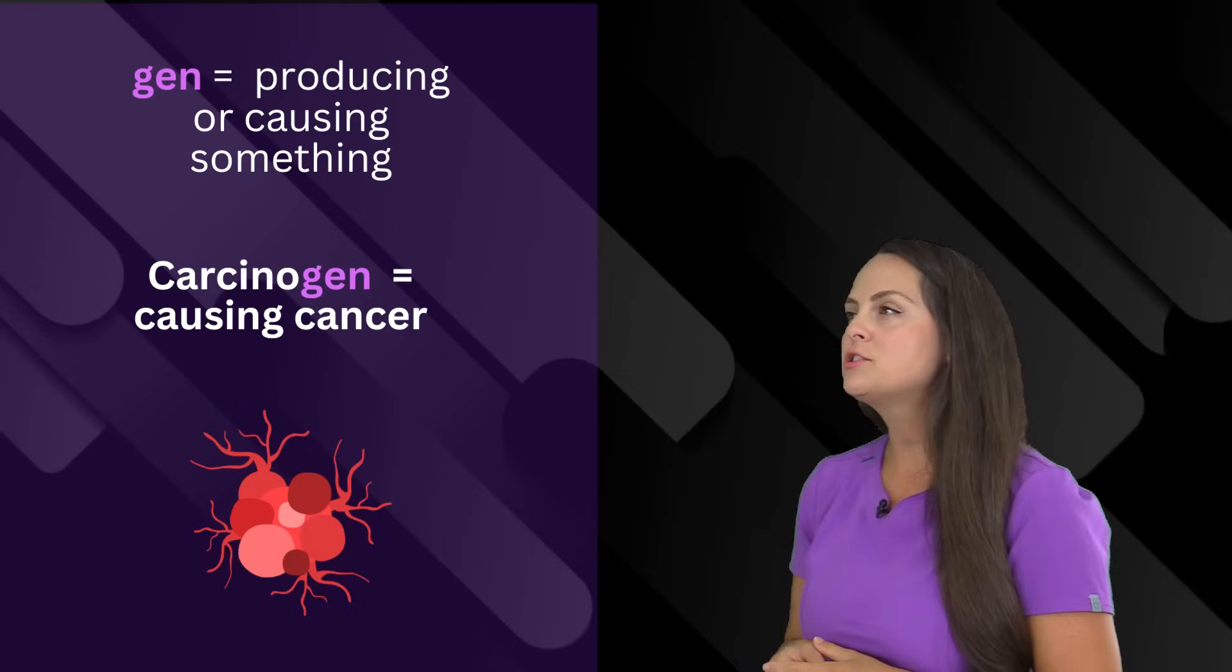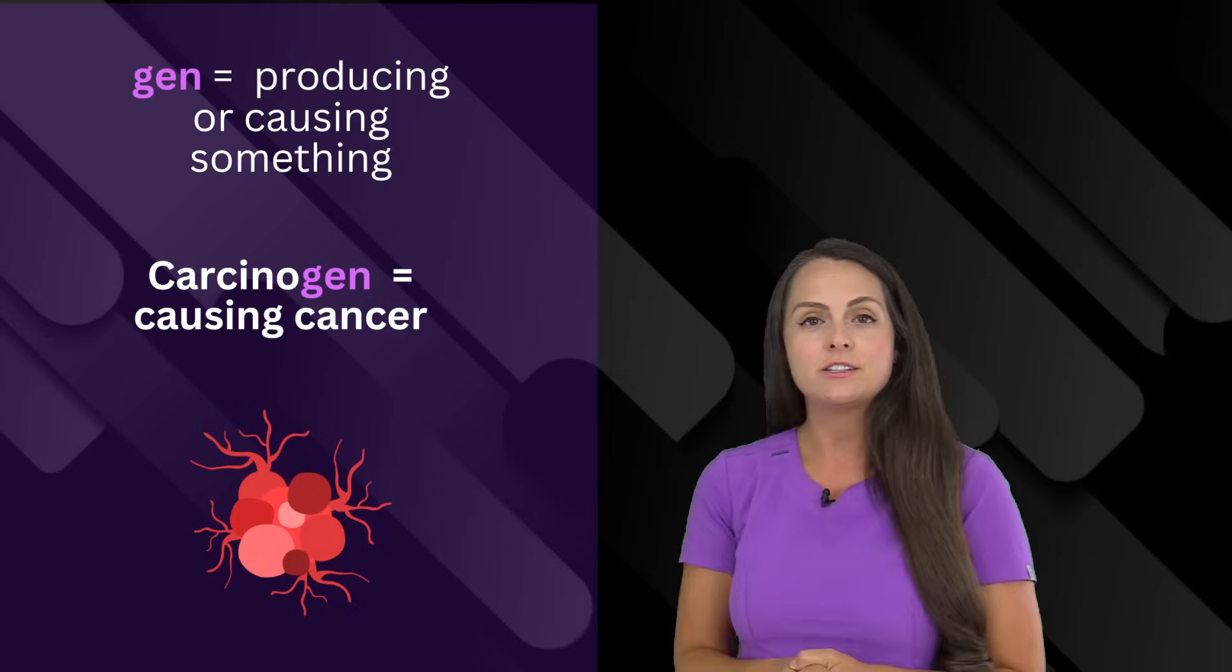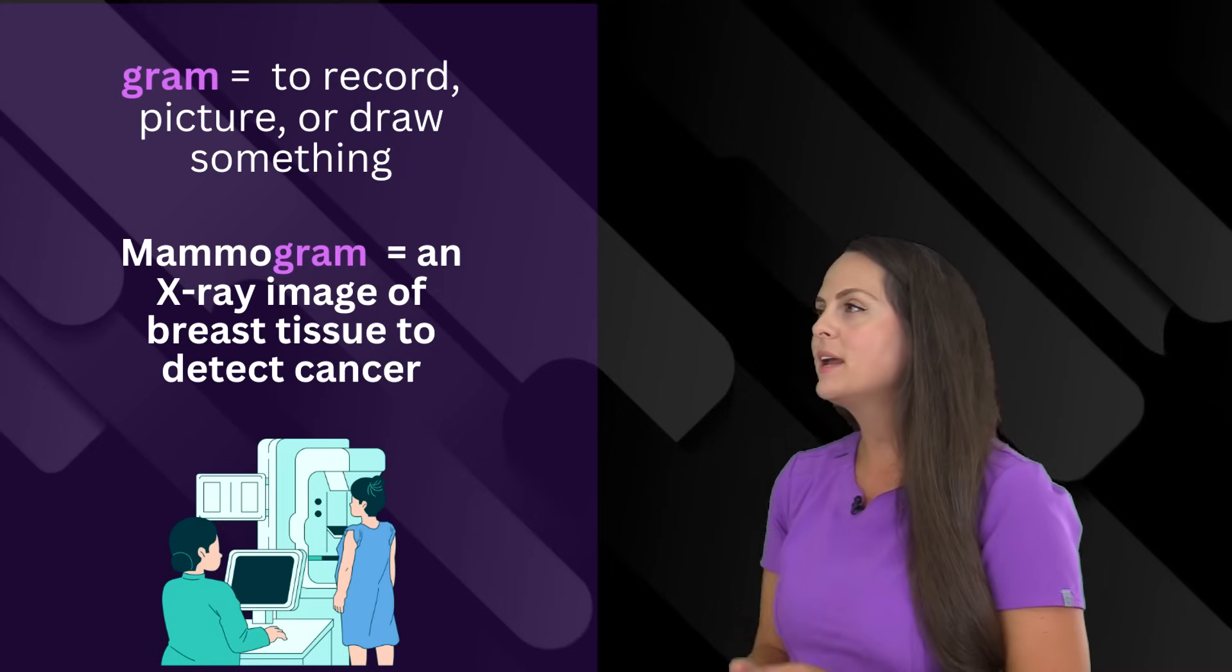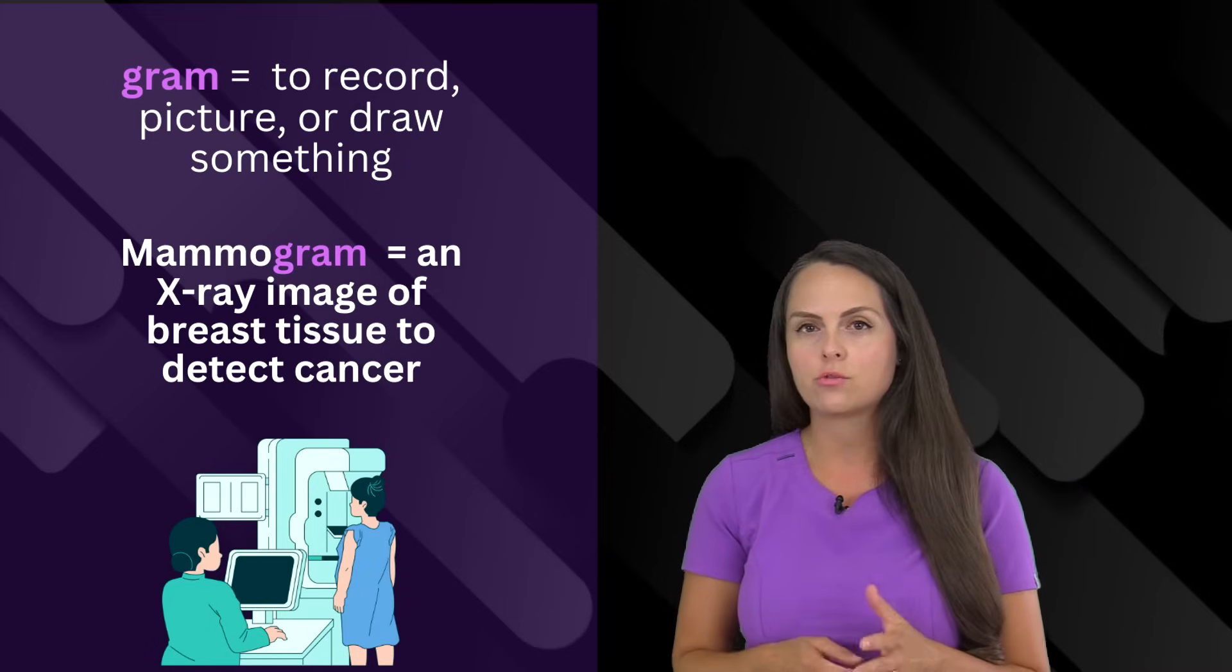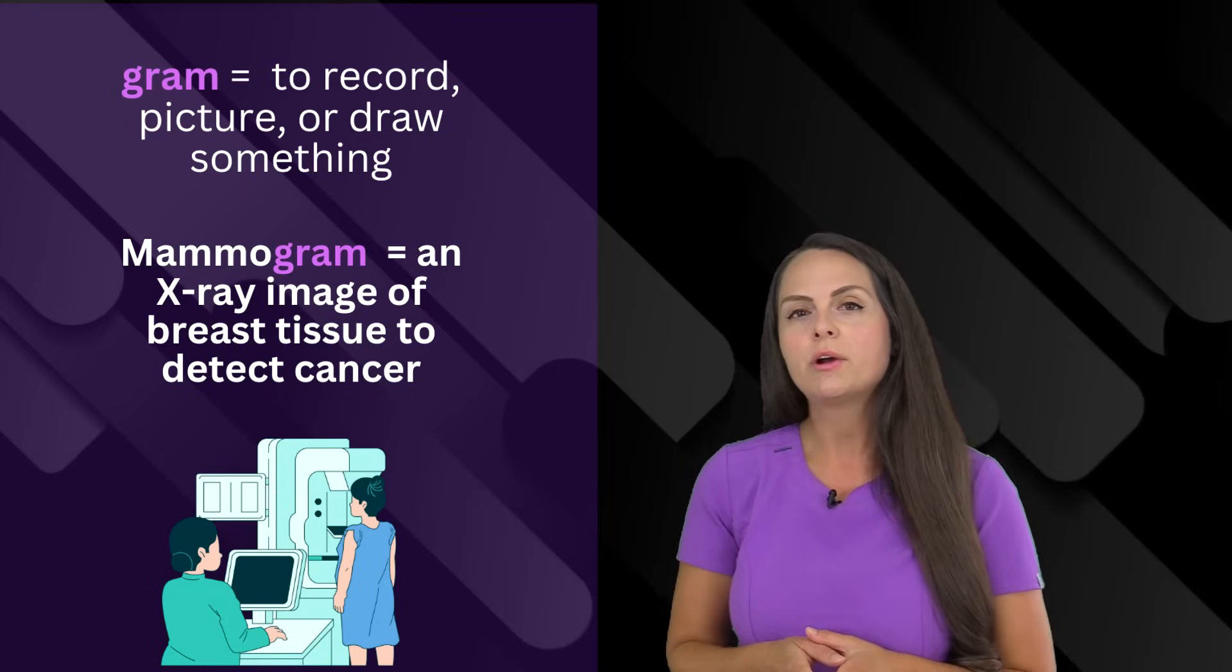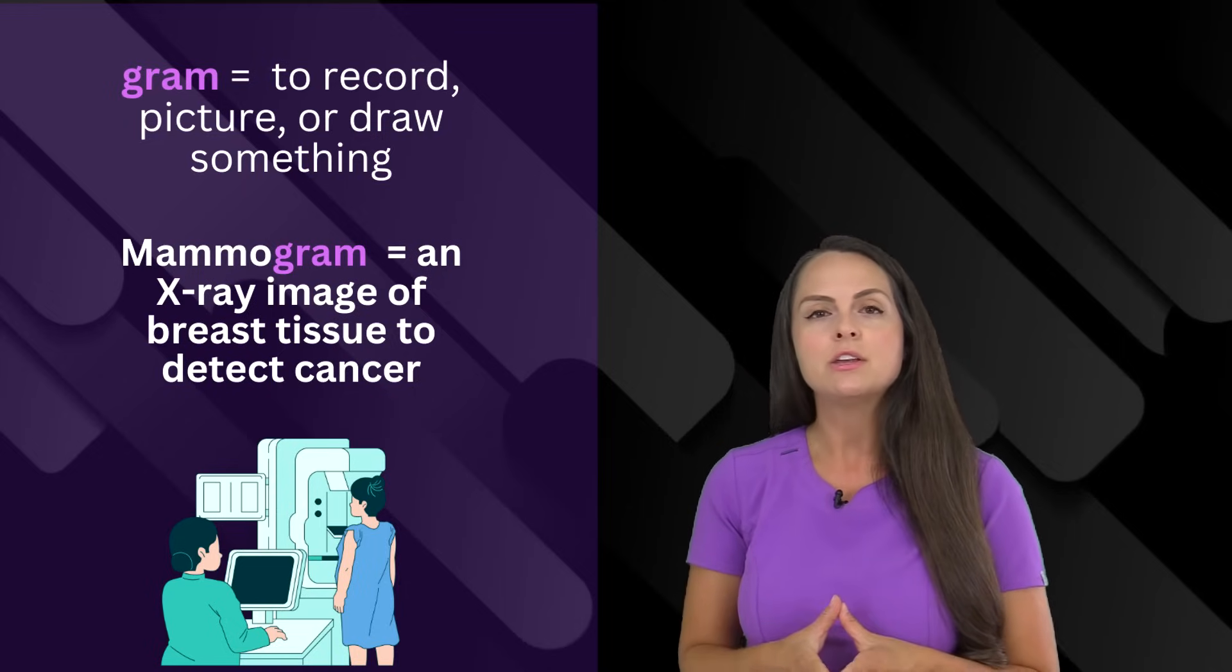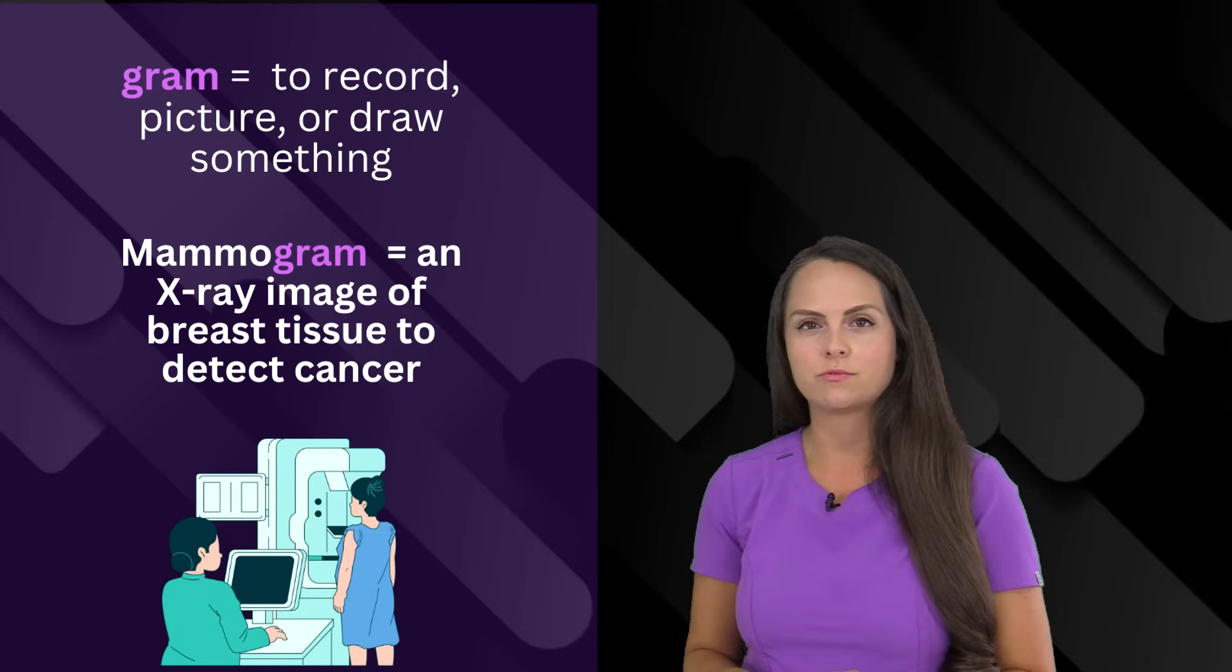Next is gen. This means to produce or cause. Whenever I say the term carcinogen, I'm talking about something that is causing cancer. Then we have the suffix gram. This means to record picture or draw something. When a person has a mammogram, that means that they're getting an x-ray picture of the breast tissue. So we can look at that x-ray imaging and see if they may have cancer in this region.